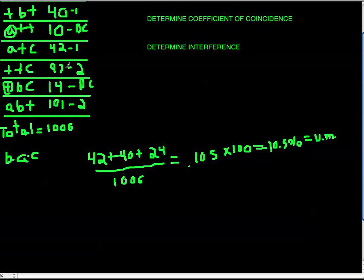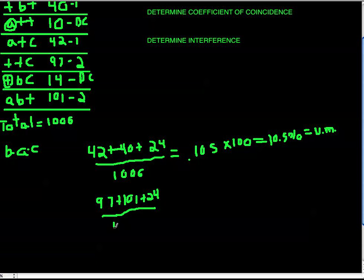Now we find the second distance using group 2 single crossovers: 97 and 101. So we do 97 plus 101 plus 24 (double crossovers) divided by 1,006. This equals 0.221.